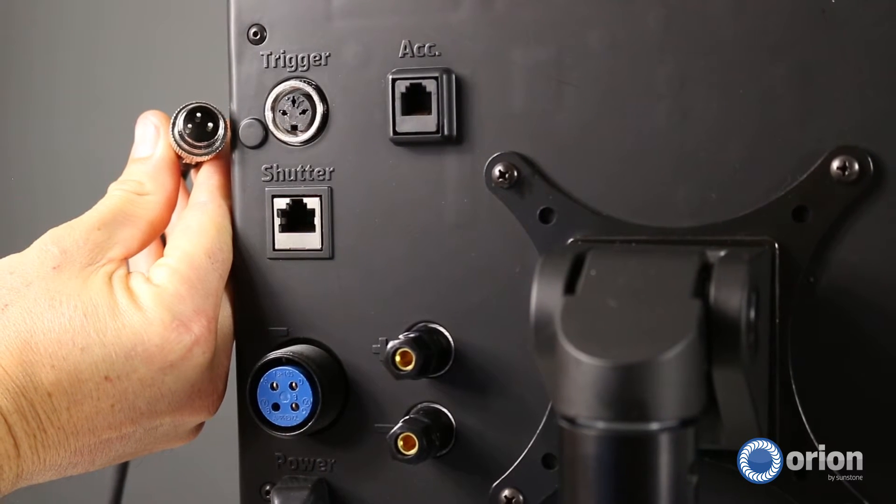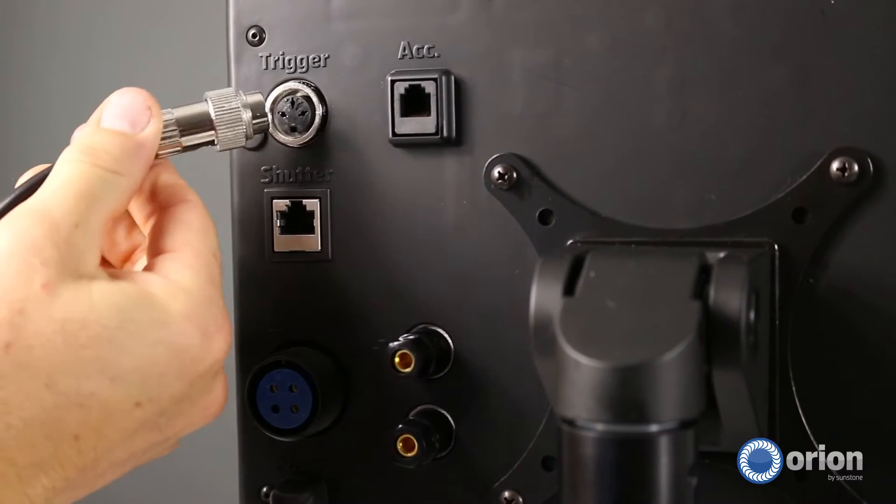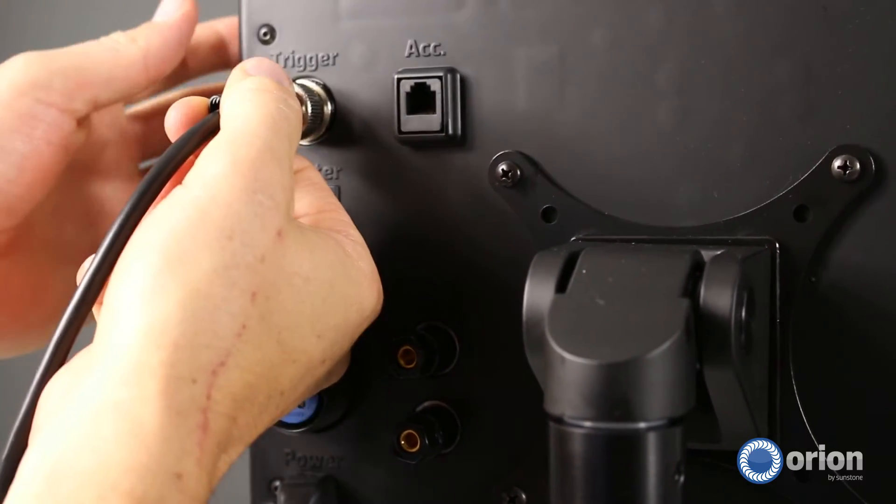Plug the 3-pin foot pedal connector into the back of the welder into the port marked trigger.